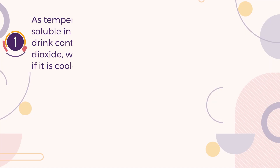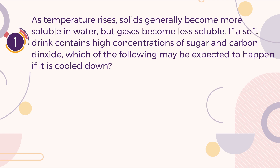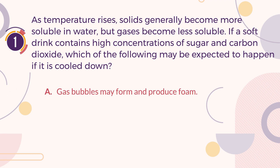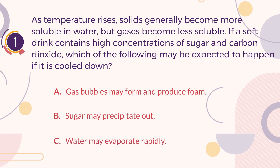Number 1. As temperature rises, solids generally become more soluble in water, but gases become less soluble. If a soft drink contains high concentrations of sugar and carbon dioxide, which of the following may be expected to happen if it is cooled down? A. Gas bubbles may form and produce foam. B. Sugar may precipitate out. C. Water may evaporate rapidly.